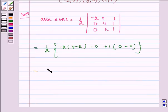Which implies half into -8 plus 2k. Now taking 2 common, we get k minus 4.